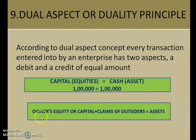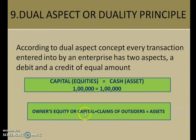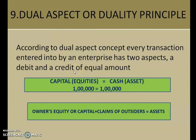One more definition: owner's equity or capital — capital is also known as owner's equity — plus the claim of outsiders, which is liability. So capital plus liability is equal to assets. That is the dual aspect: our debit should be equal to the credit with equal amount.